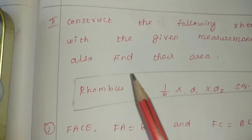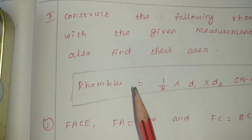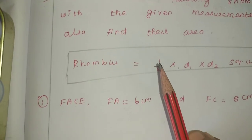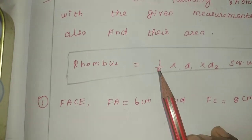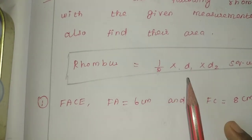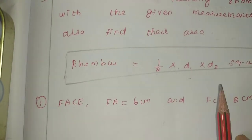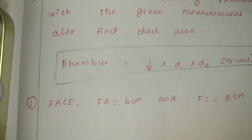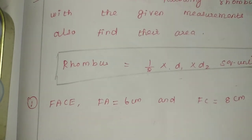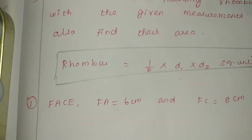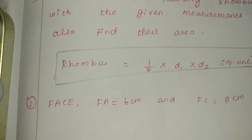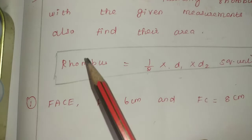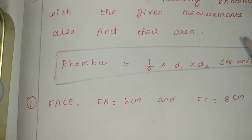First, let us recall the rhombus formula. What is the rhombus formula? Area = one-half into D1 into D2 square units. That is, rhombus area equals diagonal 1 into diagonal 2. So when we look at this formula, the diagonals are D1 and D2.